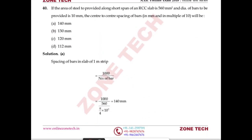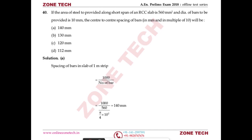Question number 40: for an RCC slab, the area of steel required along the short span is 560 mm² and the diameter of bar is 10 mm. Find the center-to-center spacing. Using a 1-meter strip width, area of one bar = π/4 × 10² ≈ 78.54 mm². Number of bars and spacing are computed based on 560 mm² requirement per meter width.